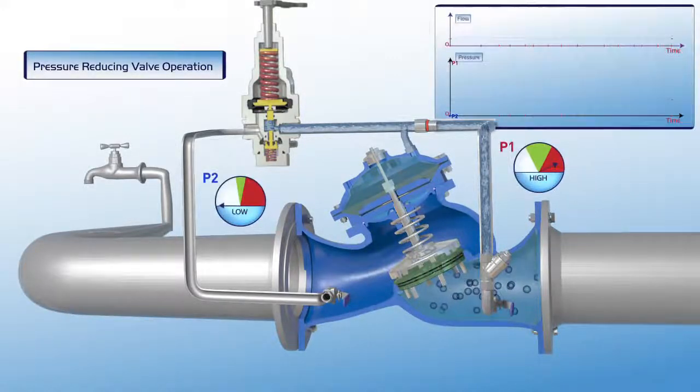At this stage, the pressure reduction valve is closed. The P1 pressure gauge shows that the valve's upstream pressure is high, while the downstream P2 pressure gauge indicates that the consumer supply line is empty.